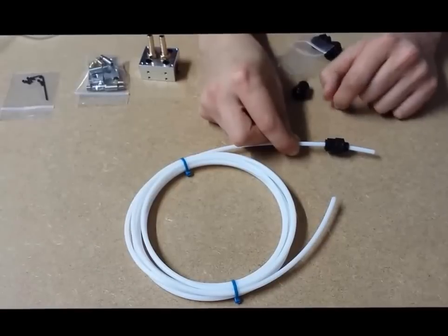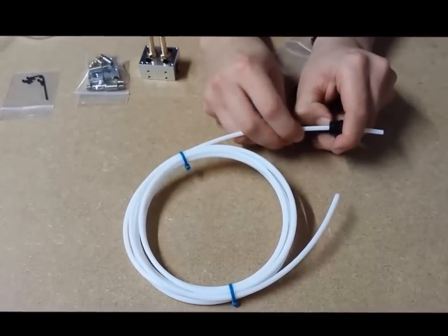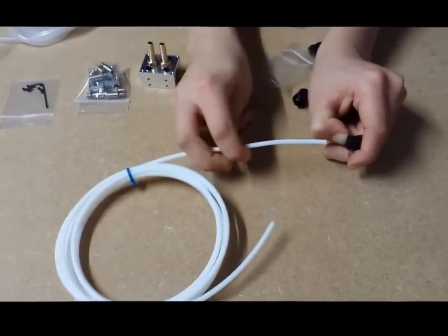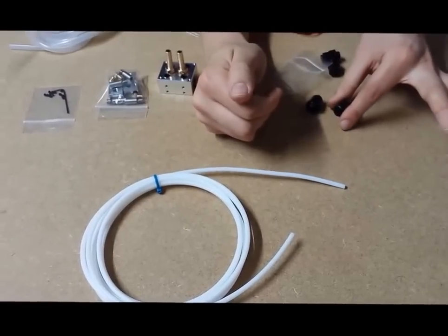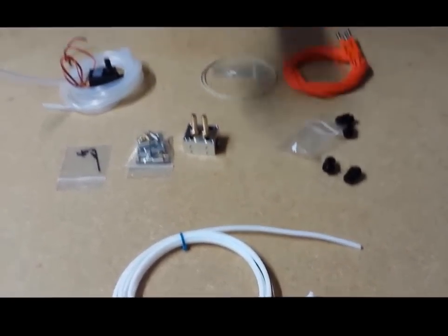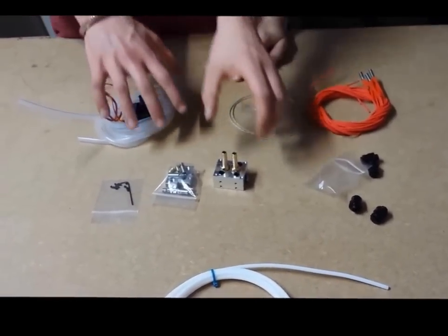Just like any other push fit connector to remove it you press in the collet and pull out the tubing by hand and it will let go. Okay over to Josh and he's going to talk to you about the brakes and the nozzles.